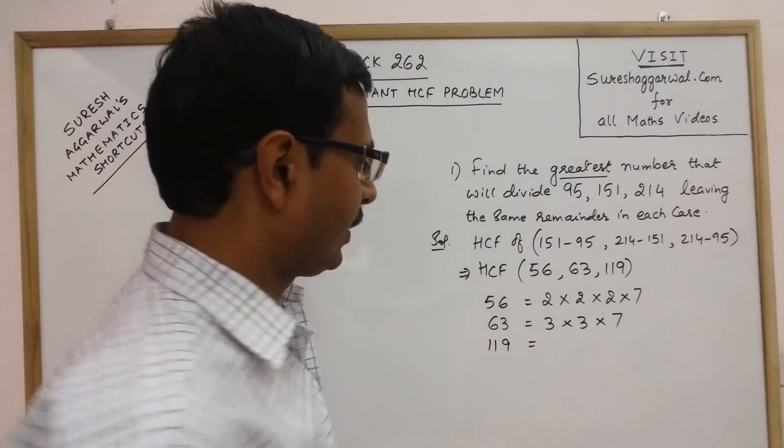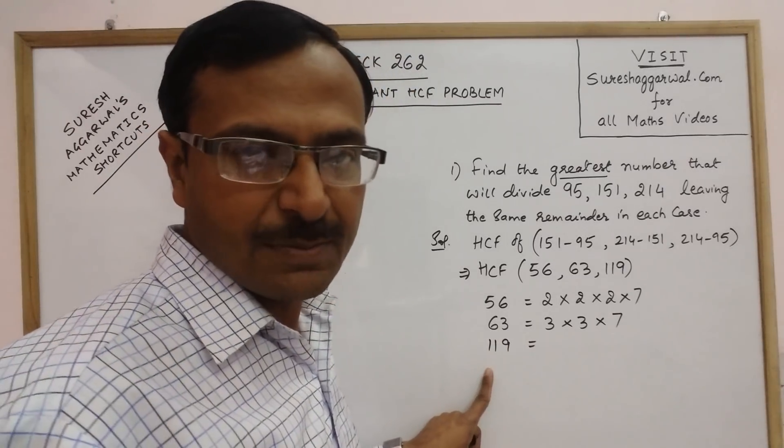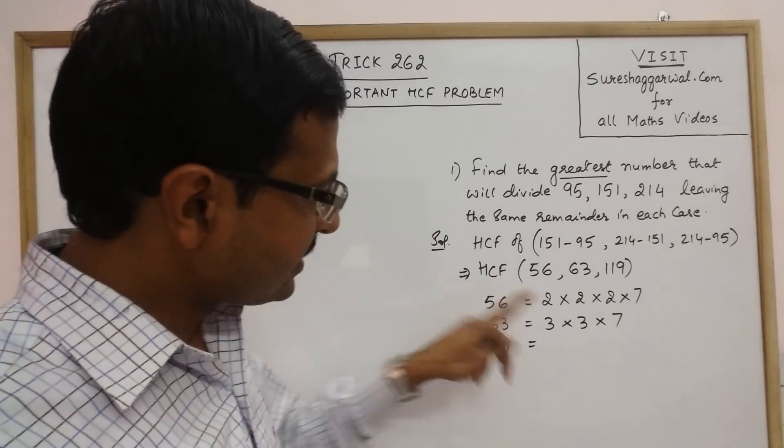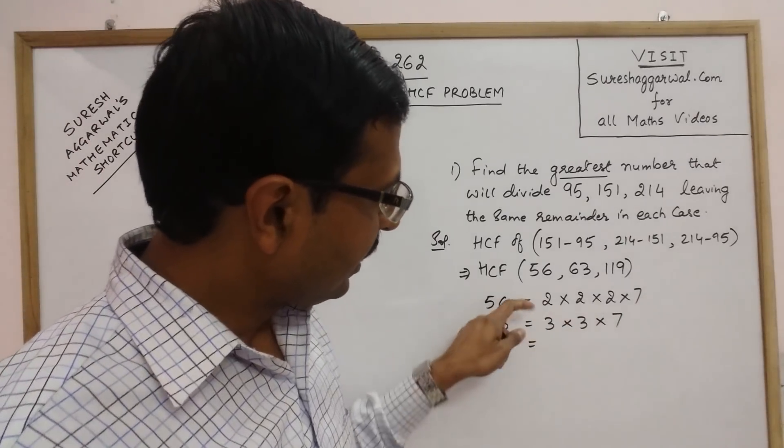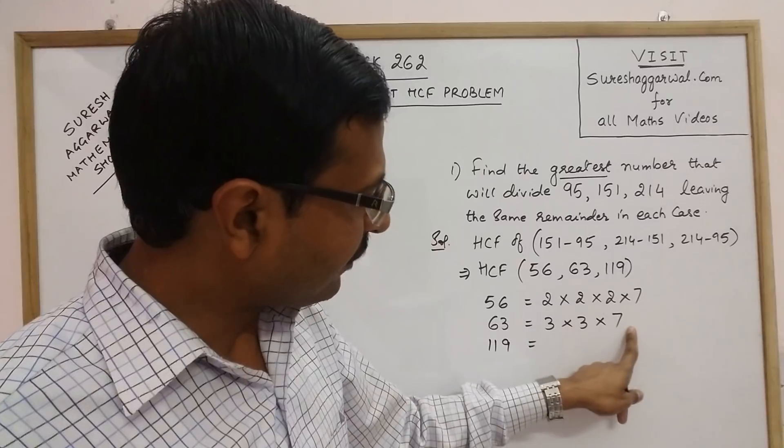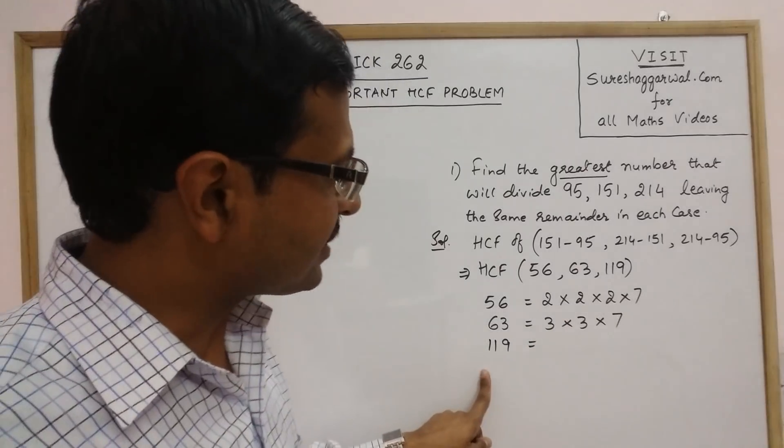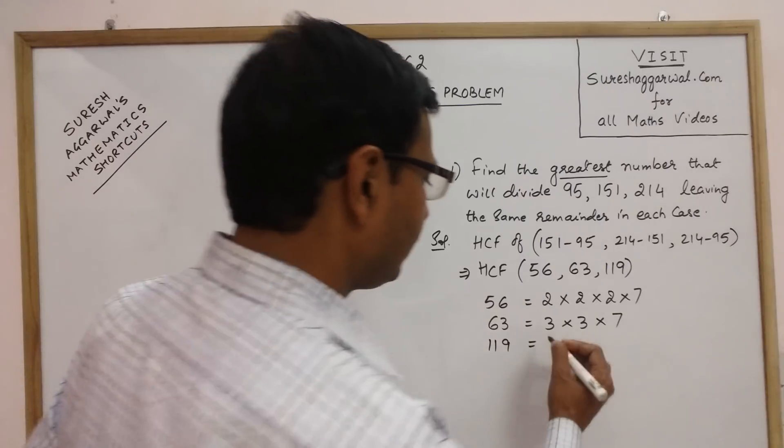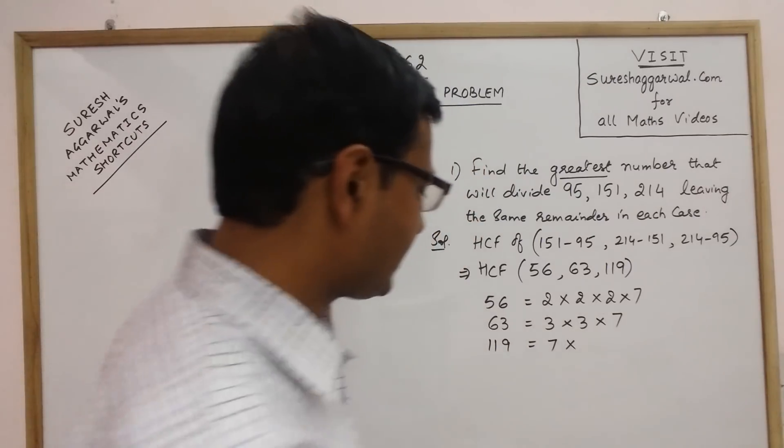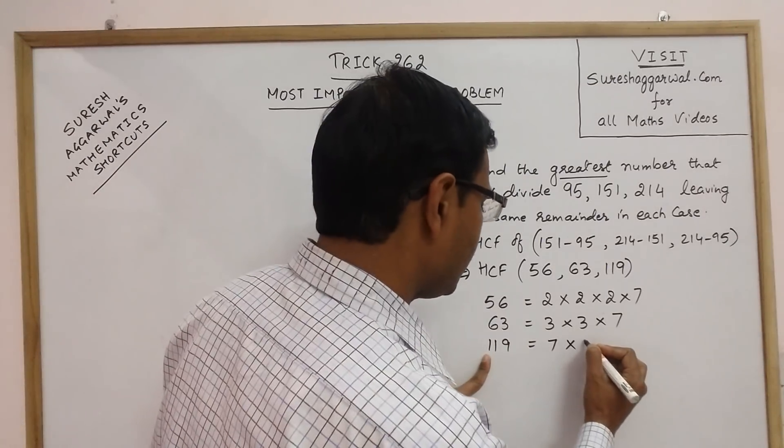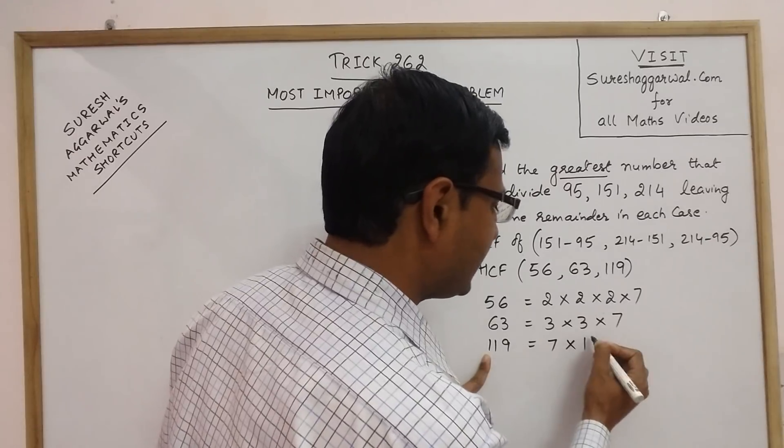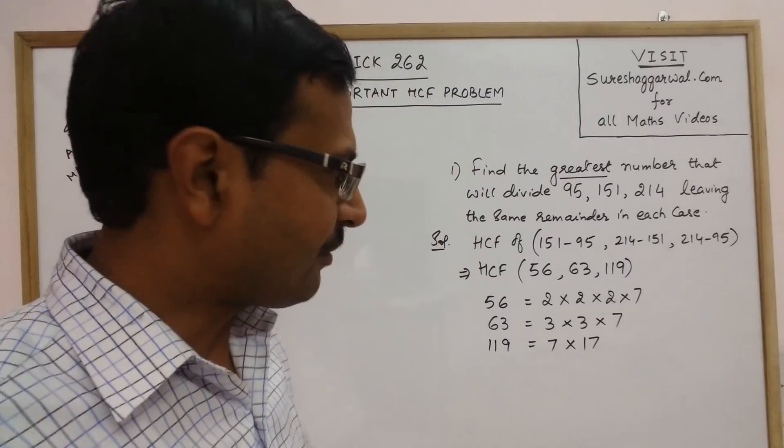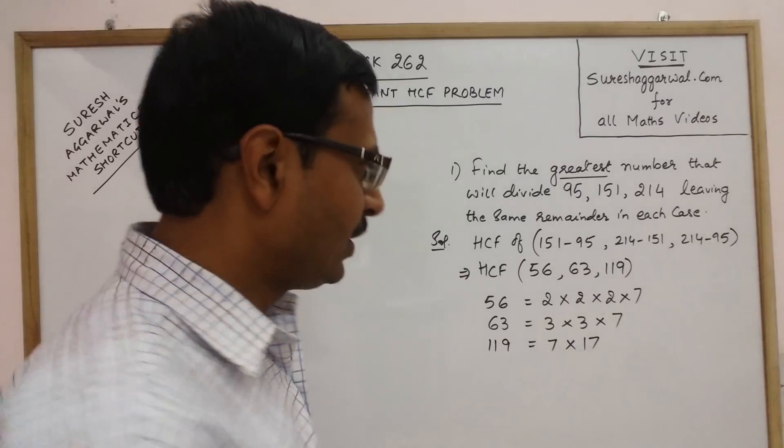119. This number is divisible by 7, obviously, because 7 is the common factor between these two. We have to check by 7 first. There is no other common factor between the first two numbers. If you divide it by 7, then it gives you 49. So 17 into 7.